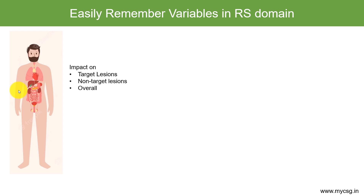The key questions that arise are: which study is this, which subject, and what is the date of the scan? Since we evaluate the response using scans performed on the patient, we need to know the scan date. We then assess response in terms of three things: the response of target lesions, the response of non-target lesions, and the overall response — classified as target response, non-target response, and overall response.